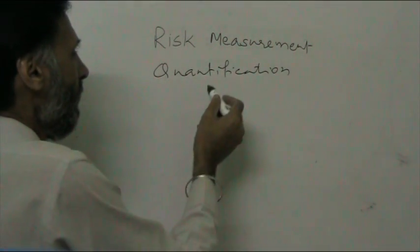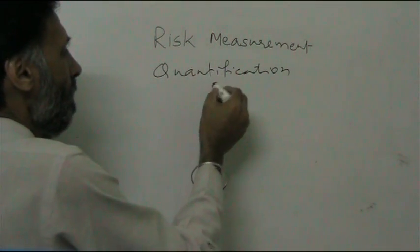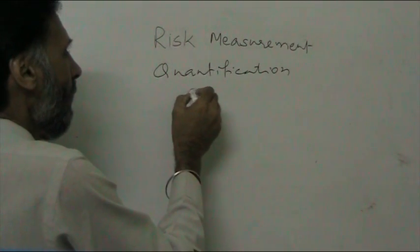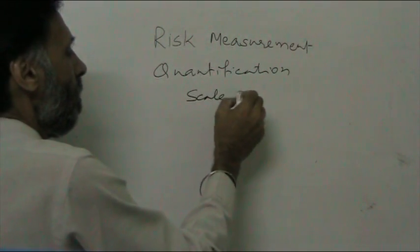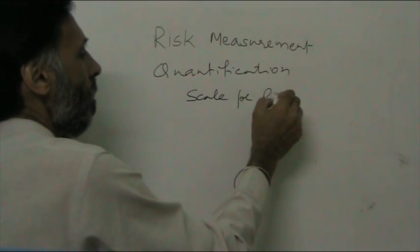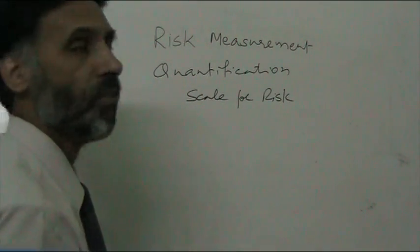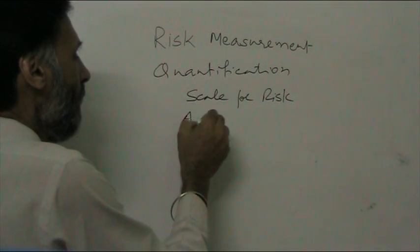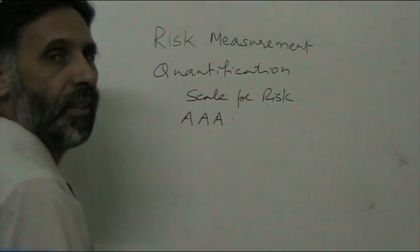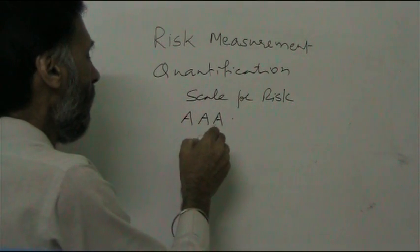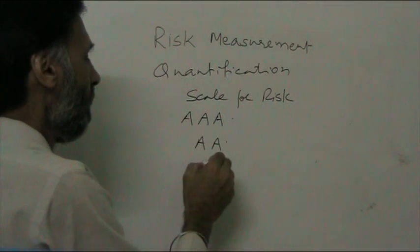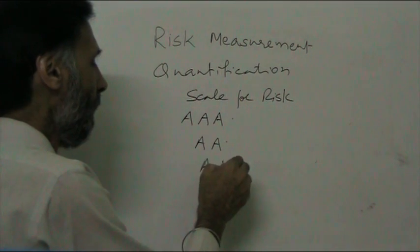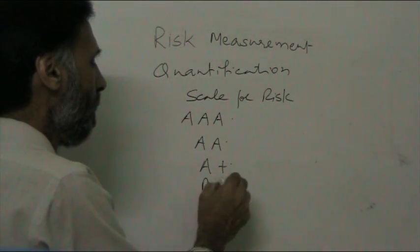For quantification, banks put their borrowers into a scale. These scales may classify a borrower as triple-A, double-A, A, A-plus, or triple-B, and so on.